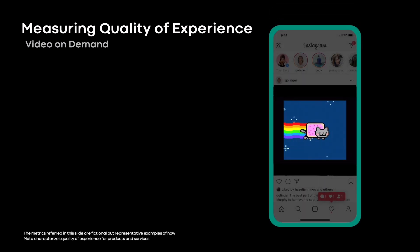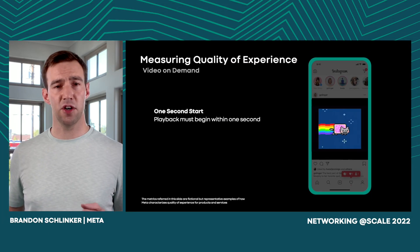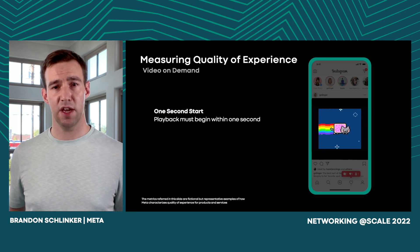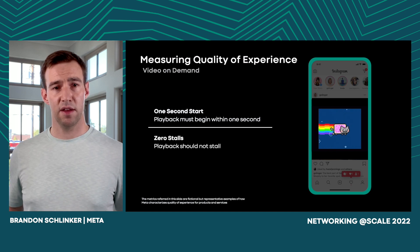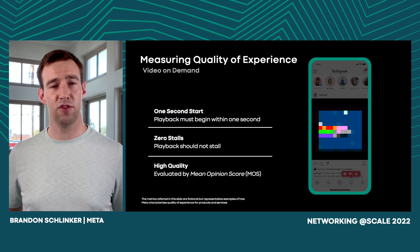Measuring quality of experience is often application-specific, and I want to start with an example using video on demand — any video a user uploads to Facebook or Instagram that you watch at any point in time. We look at three things when evaluating whether a user had good QoE for a VOD session: first, the video must start playing within one second, because we want the service to be interactive and responsive. Second, the video should not stall, as that's disruptive to the user. Third, we want the video to be of high quality, to guard against serving low-quality video just to meet the first two criteria.